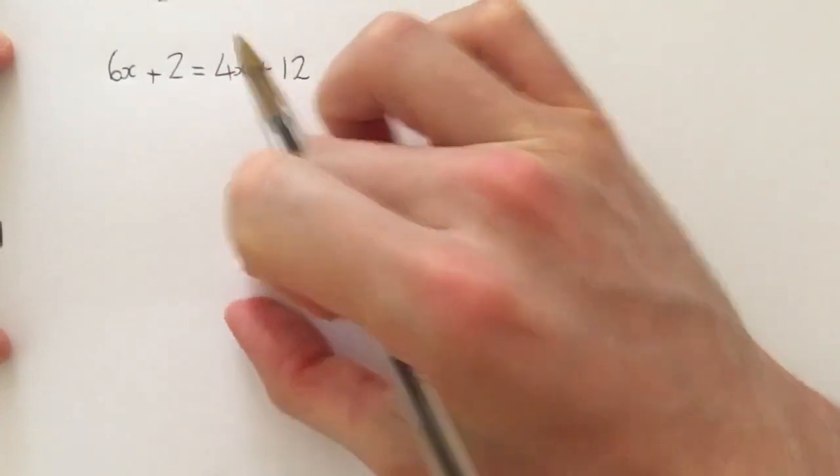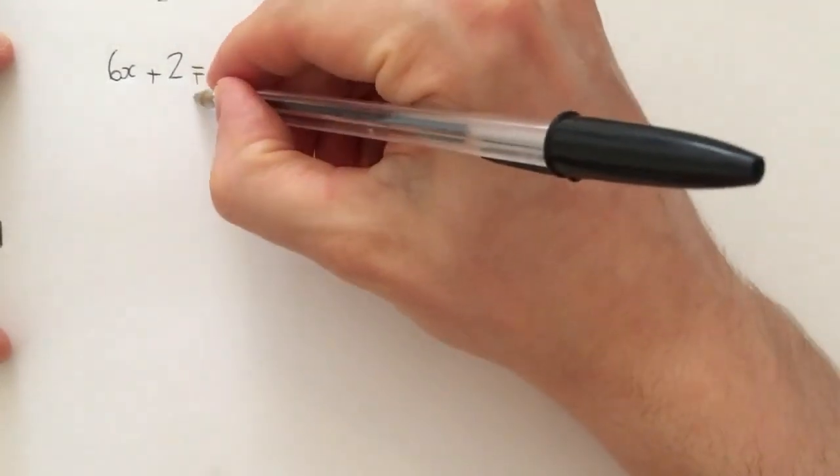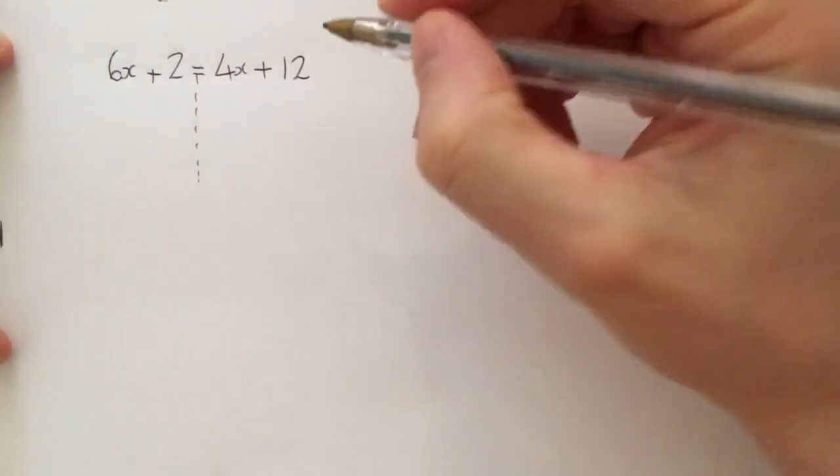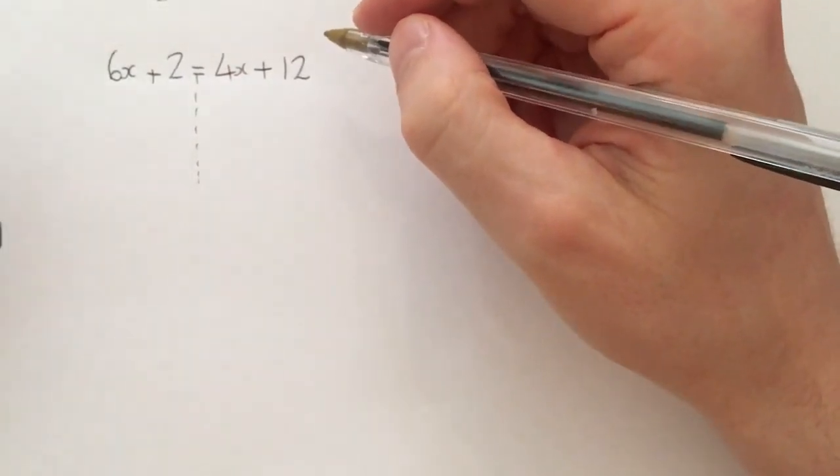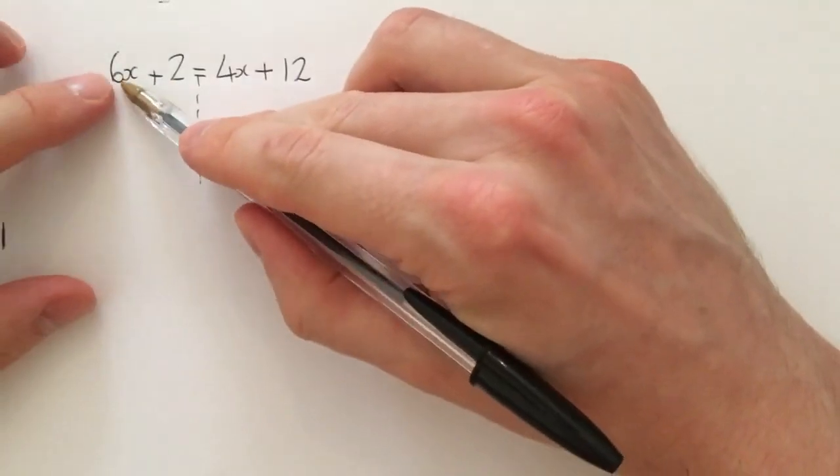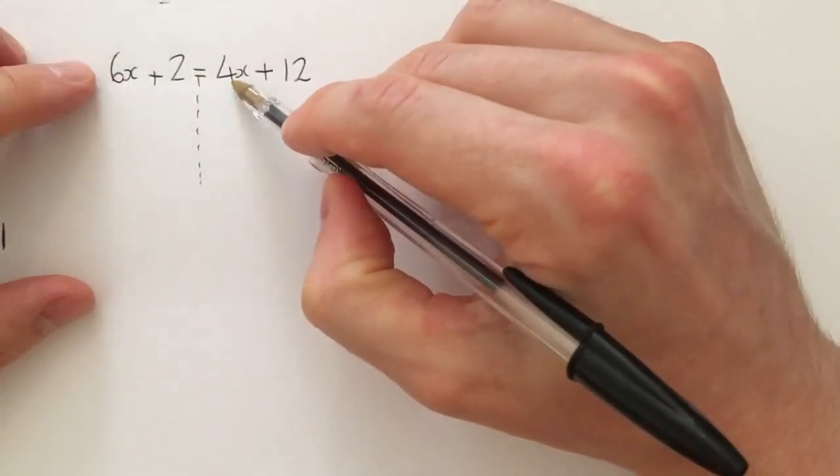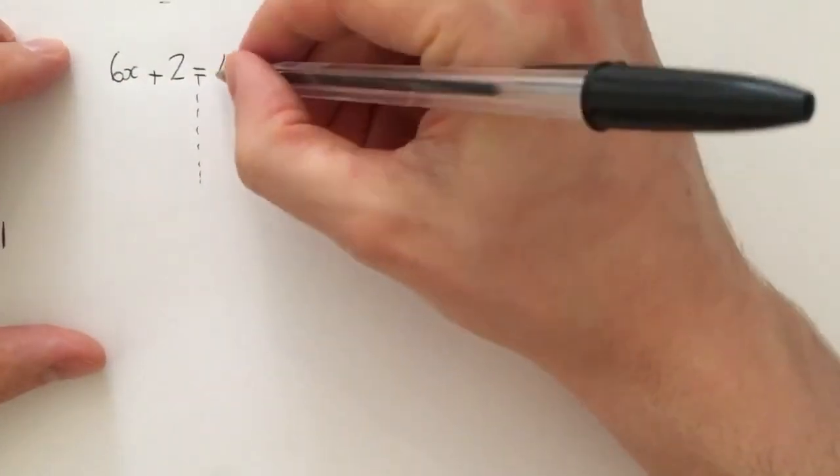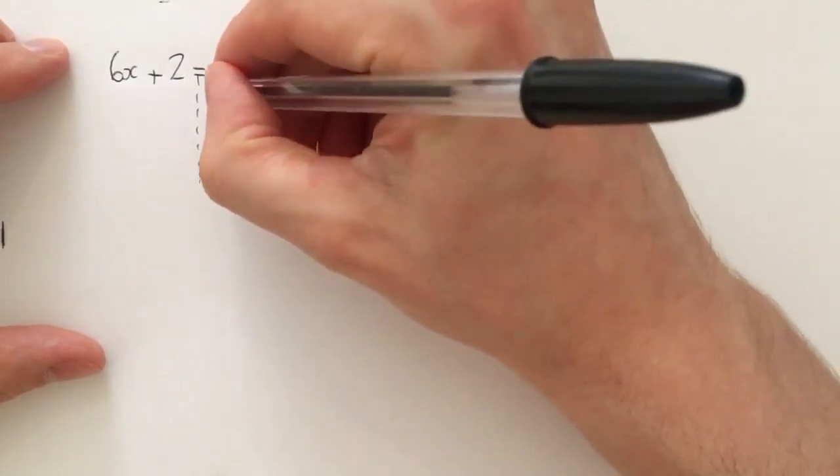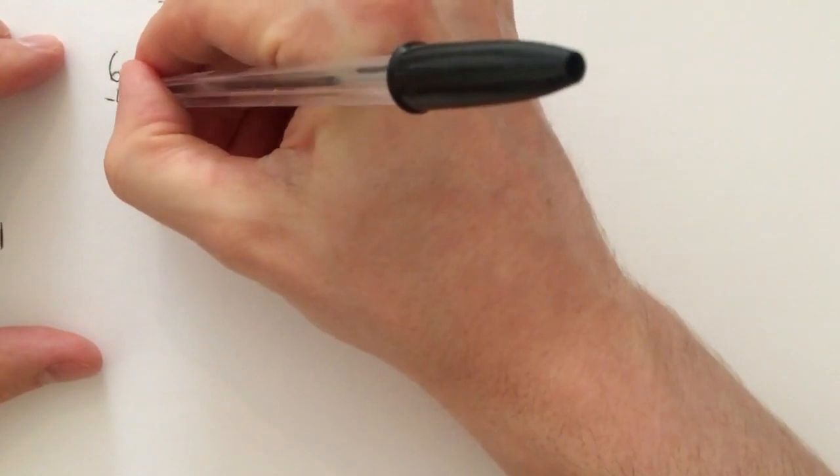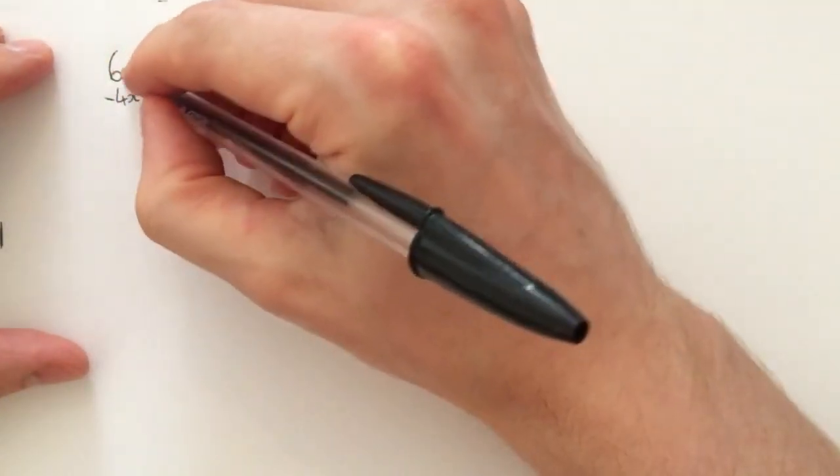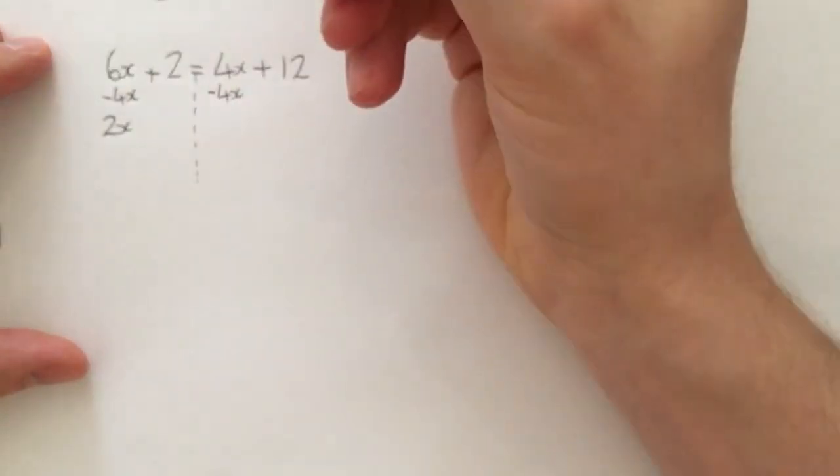Now to do that, we look at what has the smaller coefficient in front of the x. Is it the positive 6 or the positive 4? It's the positive 4. So therefore, because it says positive 4 here, I'm going to minus 4x on both sides. 6x take away 4x is 2x.